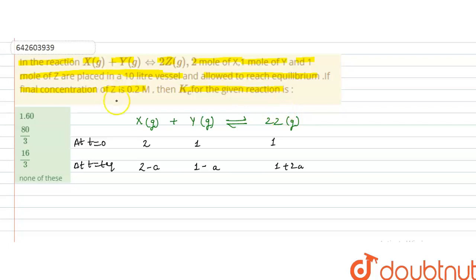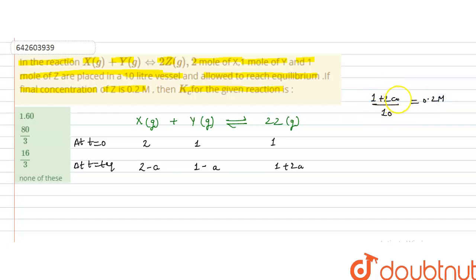Since the final concentration of Z is 0.2 molar, we write: (1 + 2a) / 10 = 0.2. Solving: 1 + 2a = 2, so 2a = 1, giving a = 1/2.